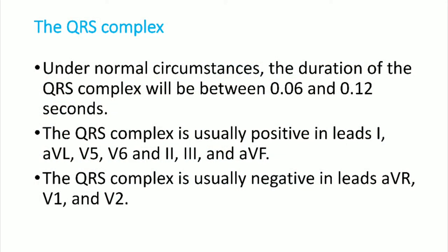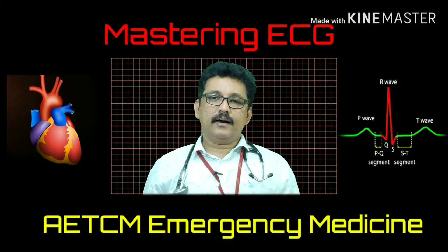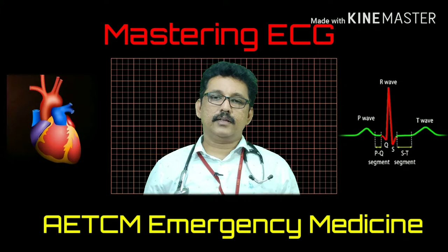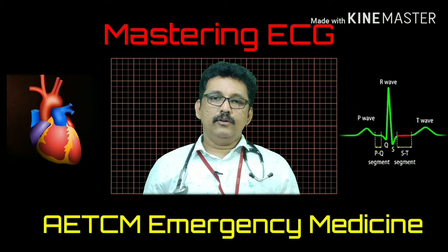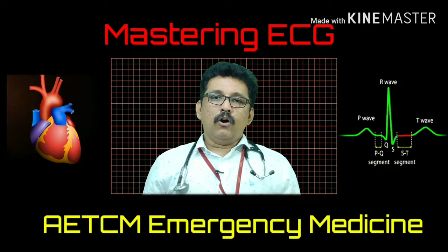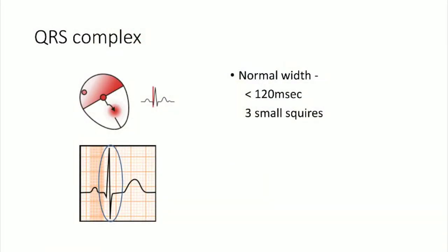Under normal circumstances, the duration of the QRS complex is between 0.06 to 0.12 seconds. The QRS complex is usually positive in leads I, aVL, V5, V6, II, III, and aVF. It is usually negative in aVR, V1, and V2. The reason aVR is negative is that the current travels away from the right-side vector connected on the right upper limb.